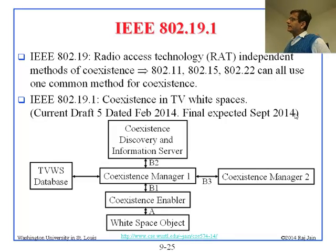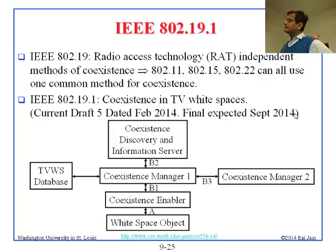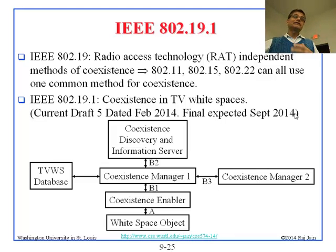802.19.1 requires several functions: a coexistence discovery and information server (CDIS), a coexistence manager, a coexistence enabler, and white space objects (devices). There may be multiple managers depending on how many networks are involved. The protocols between them — labeled A, B1, B2, B3 — all need to be standardized in 802.19.1. For example, the manager needs to talk to other managers and negotiate: 'I am using channel 2, can you use channel 3? Can we share channel 2 half and half?'